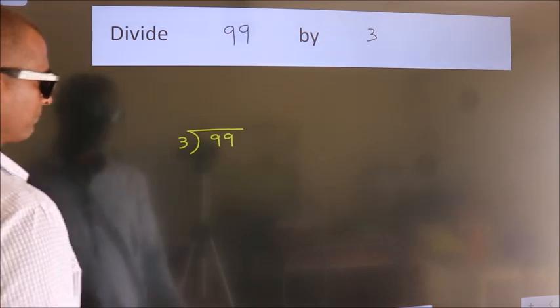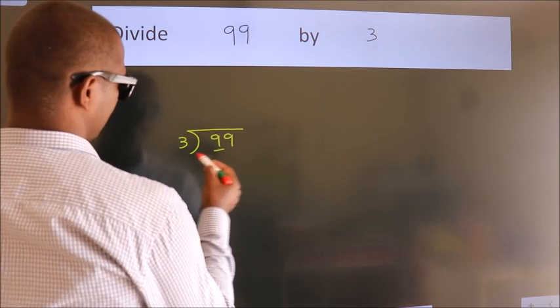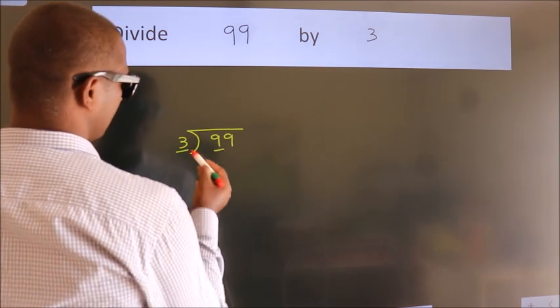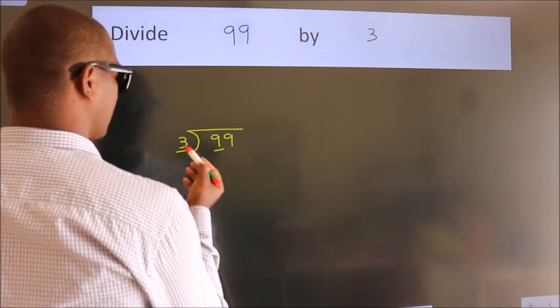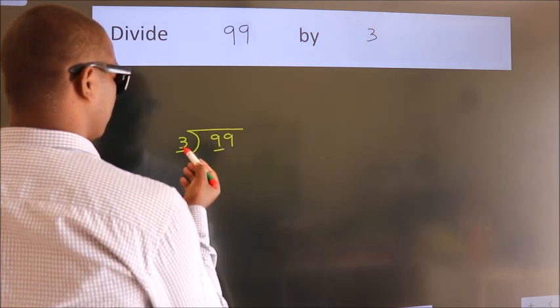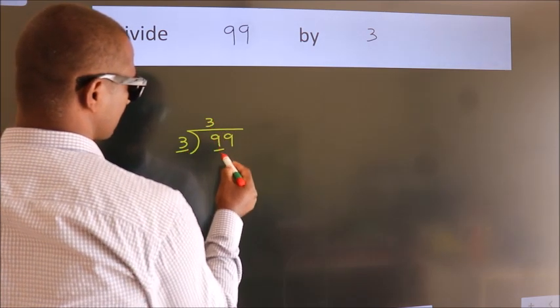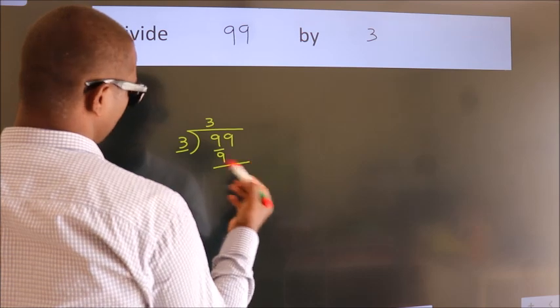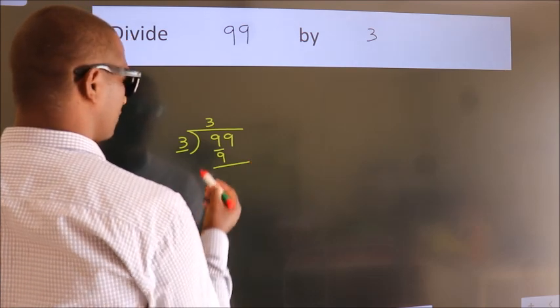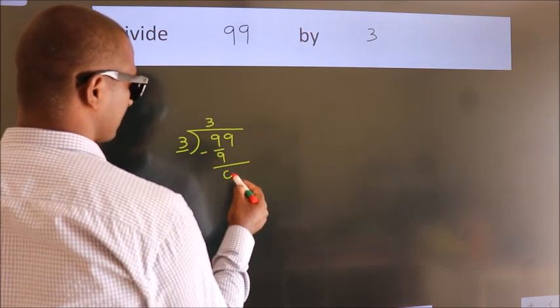Next, here we have 9 and here 3. When do we get 9? In the 3 table, 3 threes make 9. Now we subtract and we get 0.